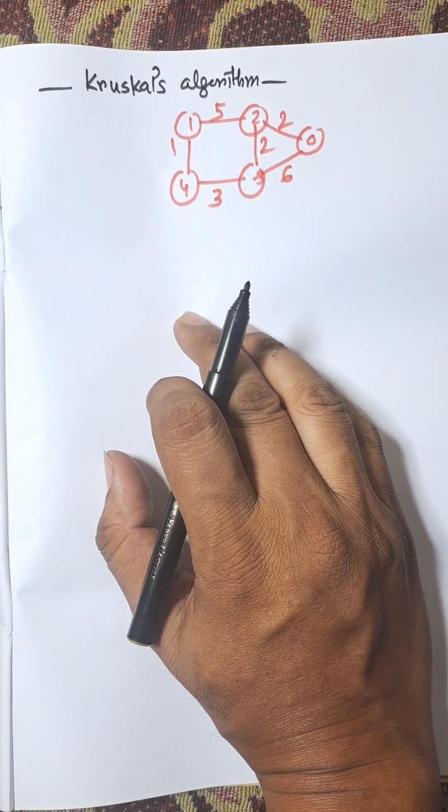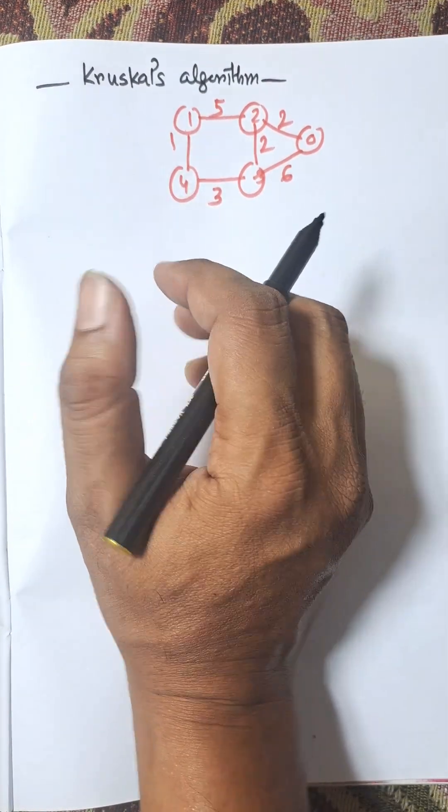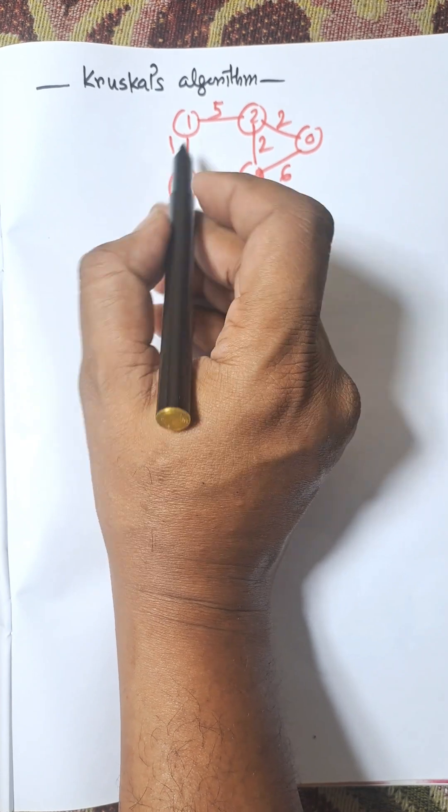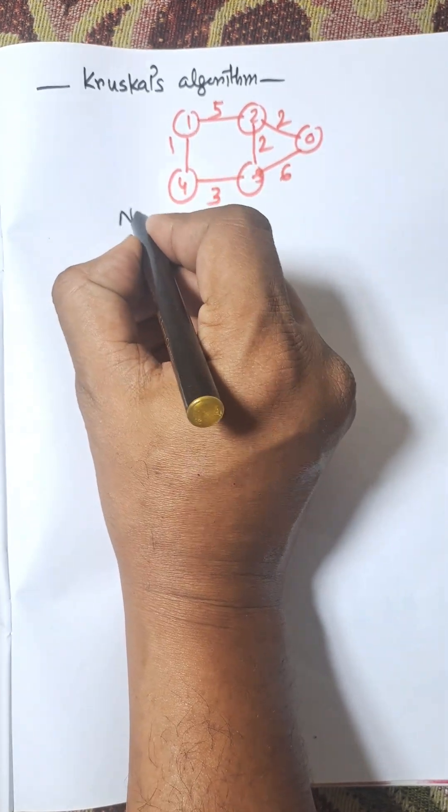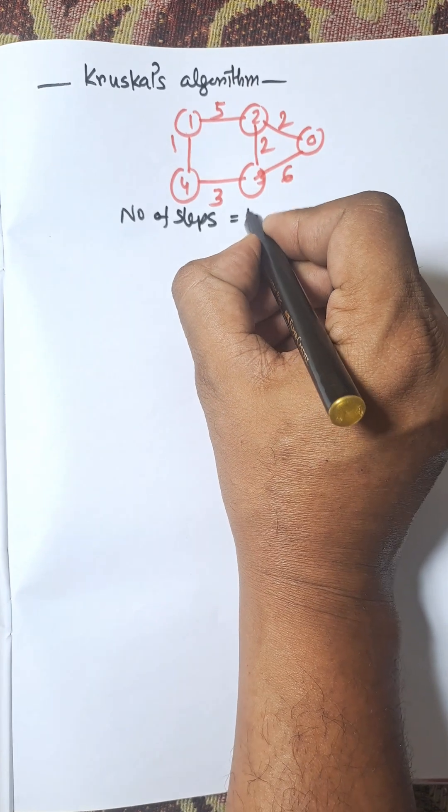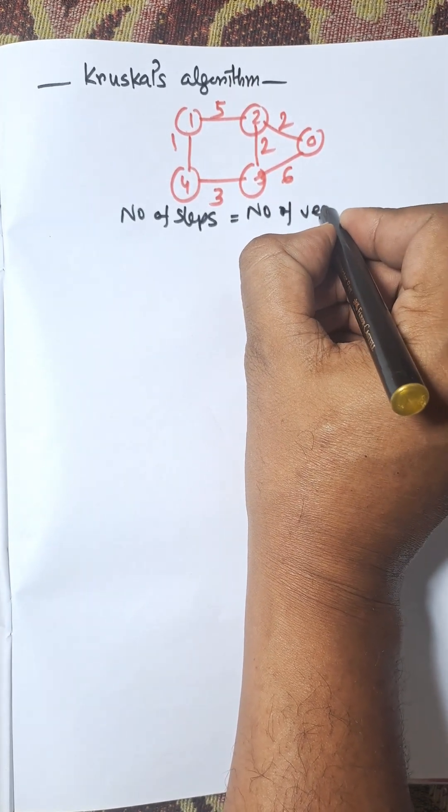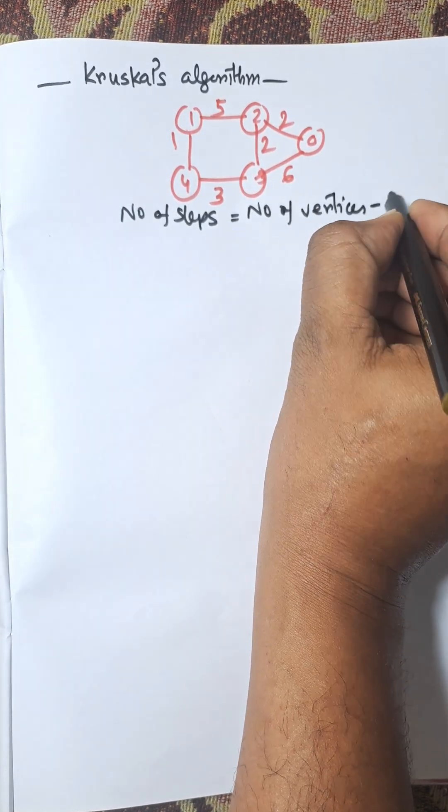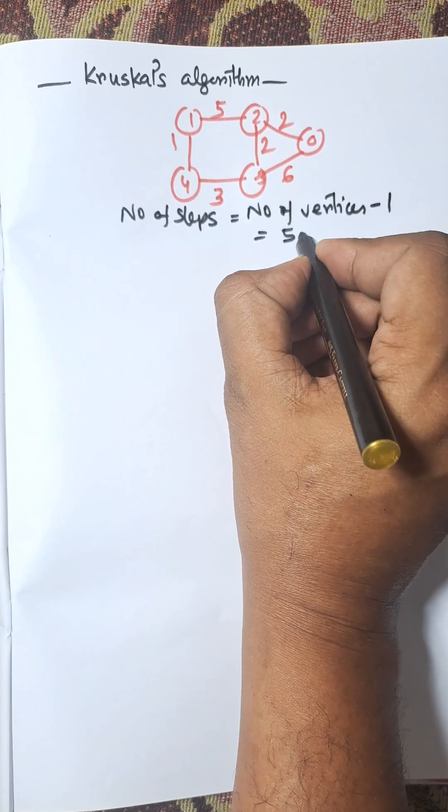Hi everybody, in this video I am going to discuss Kruskal's algorithm for the following graph. Here, number of vertices equals 5, and number of steps equals number of vertices minus 1, that is 5 minus 1 equals 4.